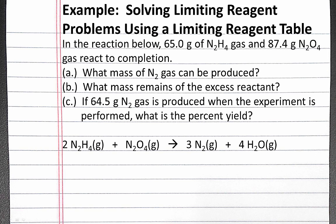In this example problem, we'll solve a limiting reagent problem using a limiting reagent table. The problem reads: in the reaction below, 65 grams of N2H4 gas and 87.4 grams of N2O4 gas react to completion.